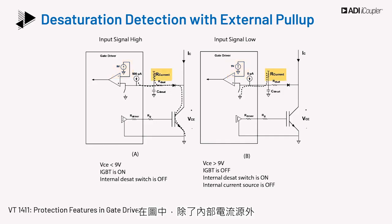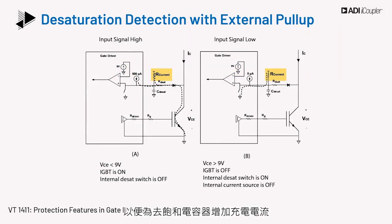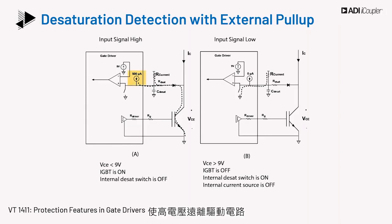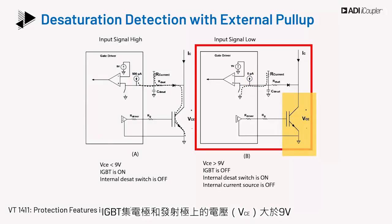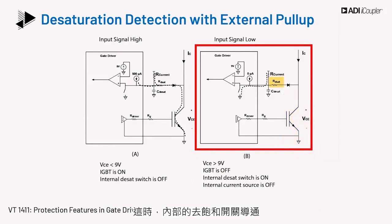An external resistor or current source is used to increase the charging current for the desat capacitor, in addition to an internal current source. A power diode with its cathode connected to the drain of the IGBT keeps the high voltage from the drive circuitry. When the input signal is low, the IGBT is off, and VCE is greater than 9 volts since it blocks a high voltage. At this time, the internal desat switch is on, keeping the desat pin and blanking capacitor CDSAT voltage at ground, and the internal current source is off.